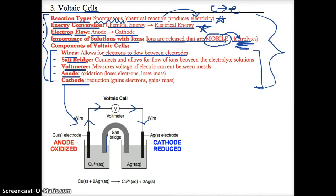The salt bridge connects the two solutions. Its main function is to allow for the free flow of ions between the electrolyte solutions. Since these solutions have free mobile ions, the salt bridge allows them to flow back and forth.